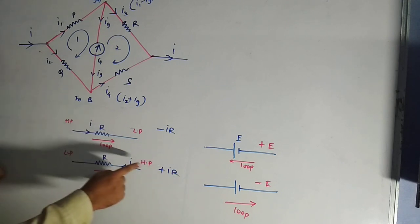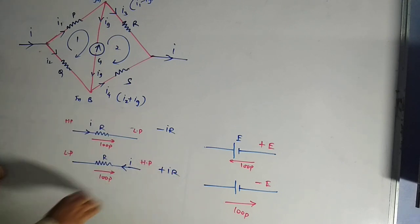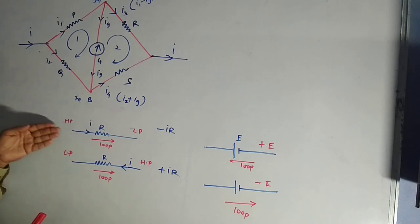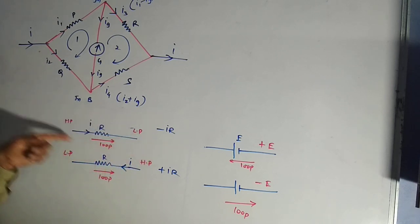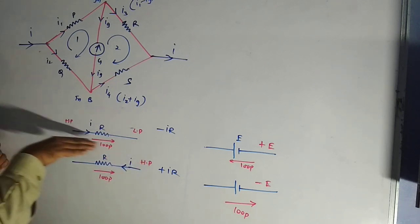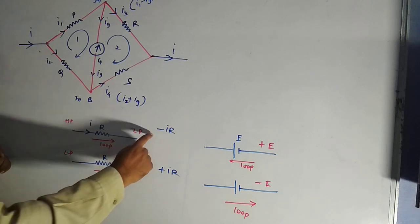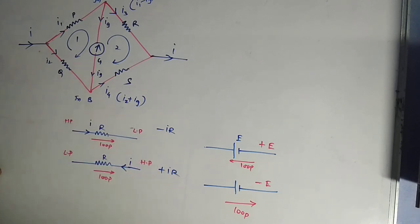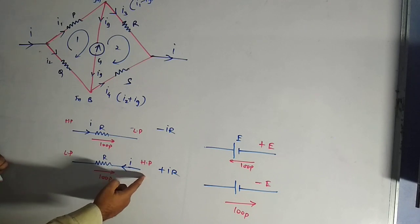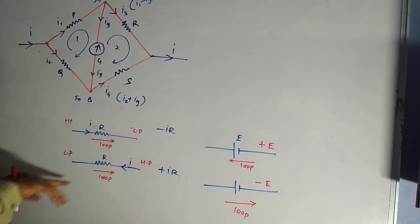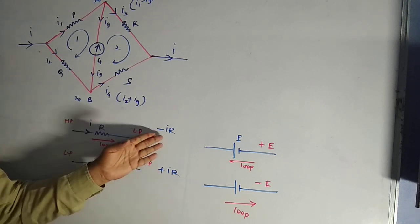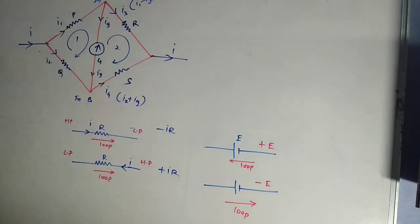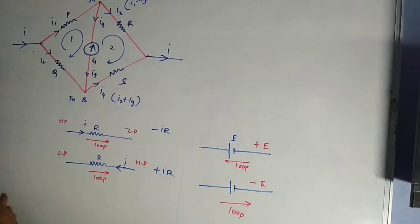When current moves in a direction and the loop is in the same direction, we are going from higher to lower potential — that gives a minus I·R sign. If the loop direction is opposite to the current, you are going from lower to higher potential, giving a positive sign. So the sign convention for KVL depends on whether the loop traversal is along or against the current direction.